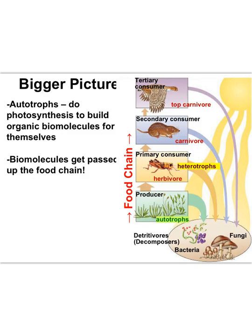Higher trophic levels kind of steal from plants when they eat the plants. The products from photosynthesis are passed up the food chain when plant biomolecules make their way from one consumer level to the next.